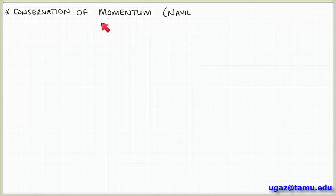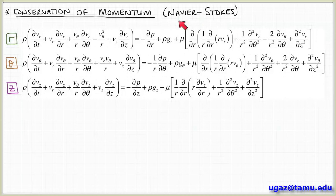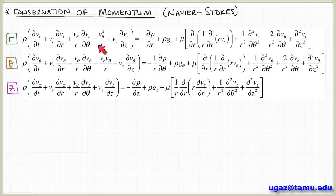We also looked at conservation of momentum. For the case of an incompressible Newtonian fluid, this is called the Navier-Stokes equation. This is a complicated-looking set of equations with three components — r, theta, and z — in cylindrical coordinates. These equations can be found in a table in your textbook. We already identified cylindrical coordinates, so this is the corresponding form. Let's go term by term and see which terms actually contribute to this problem.